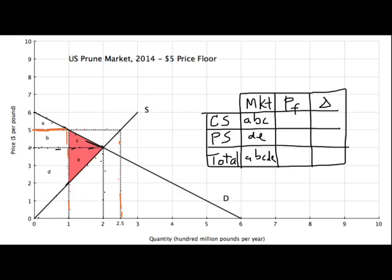Under the price floor, consumers now pay five dollars a pound and only buy 100 million. They just get A in surplus. Producers, though, sell fewer pounds of prunes, but they get a higher price. So they gain area B, but they lose area E. The way I've drawn it here, it looks like B might be the same size, or maybe even smaller than E.